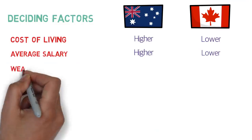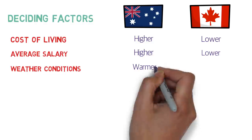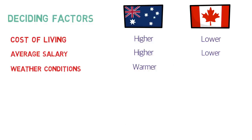Weather conditions are much better in Australia — it is much warmer. If you come from countries like India or Pakistan, you'll find the Australian climate much more familiar. Canada, on the other hand, is famous for its cold weather, and for three to four months of the year temperatures can drop to around minus 25 to minus 35 degrees Celsius in some places.